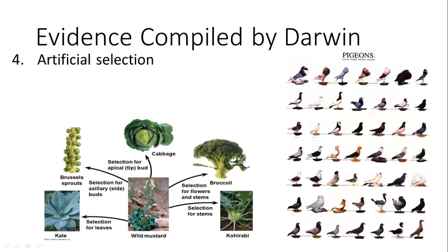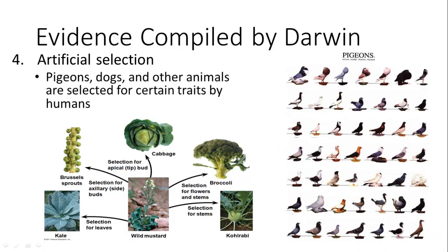Darwin was also involved in artificial selection — he was a pigeon breeder. Pretty much all pigeons from the same species look similar, but you can select for different traits and create different breeds with lots of different variations, yet their parents all looked the same. Similarly, in agriculture, wild mustard was cultivated into multiple different vegetables we eat today: kohlrabi, broccoli, cauliflower, cabbage — because different traits were selected for different types of food. The idea was: if humans can select for specific traits and create variation in a population, maybe environmental pressures are doing the same thing.